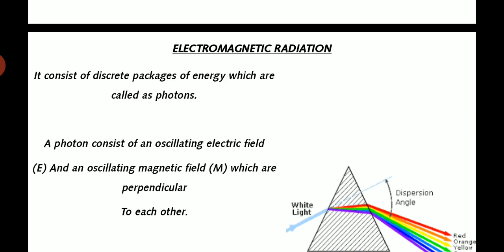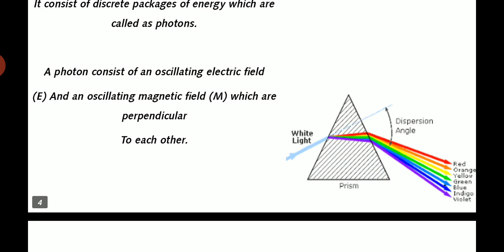It consists of discrete packages of energy which are called photons. A photon consists of an oscillating electric field and an oscillating magnetic field which are perpendicular to each other. As we can see in the diagram, there is white light which passes on a dispersion angle. And there are other lights: red, orange, yellow, green, blue, indigo, violet. In the prism, when the light comes in one form, in the prism it shows in seven forms.